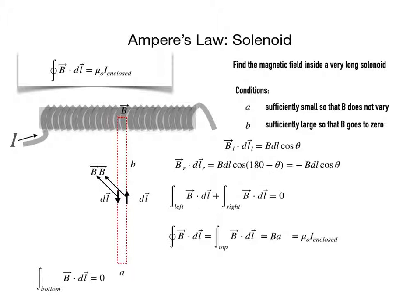And so we're left with the value of B dot dℓ for the top portion of my path which goes across in the middle of the solenoid.